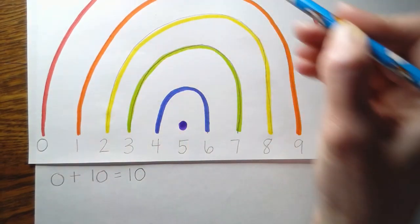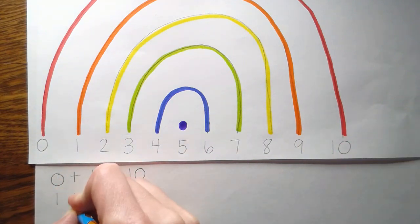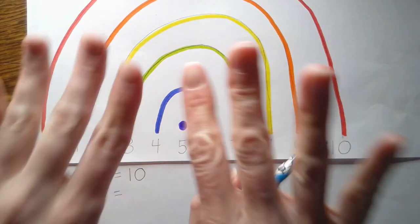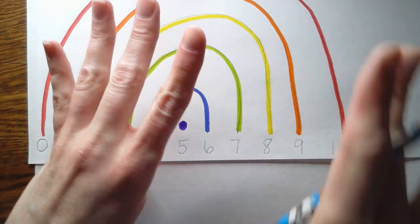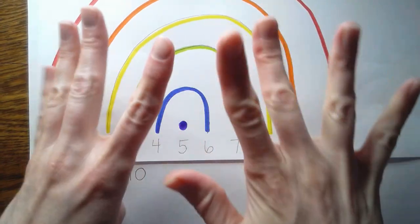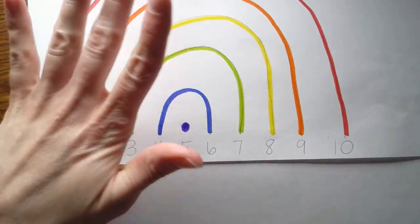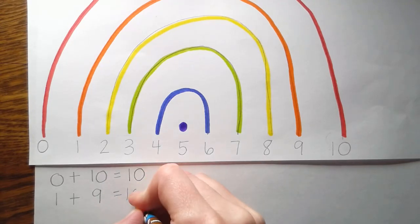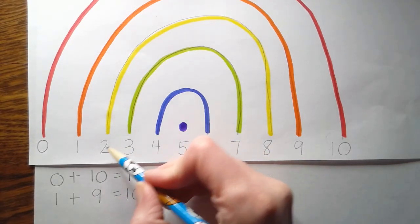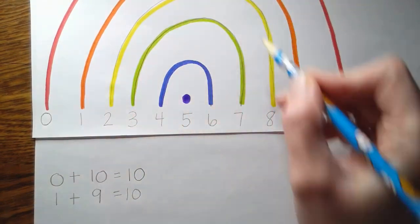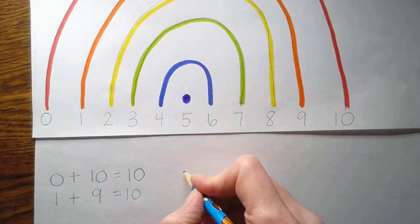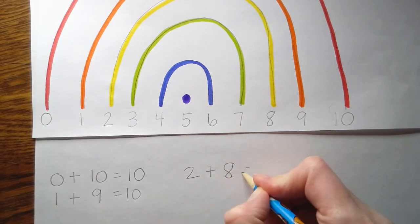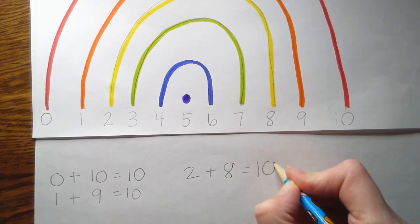One over to nine. Here we go. One plus nine equals, let's see, nine plus one more equals 10. Oh, it's working. How exciting. Let's do the next one. Two over to eight. Two plus eight equals, you guessed it, it's 10.